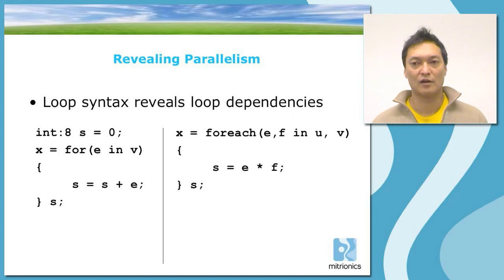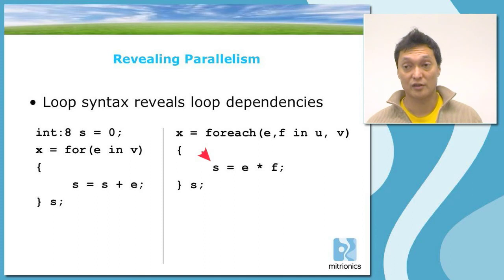In the example on the right, we have a foreach loop. Here, the foreach loop iterates across the two collections u and v. For each element e and f in the collections u and v, we will do the computation of multiplying the elements together. So we are doing a pairwise computation, a pairwise multiplication of the elements of the two collections. This operation has no loop dependencies. The computation of the multiplication of elements 10 in the two collections has no dependency on the computation of elements 9 in the two collections. So the loop has no dependencies on the previous iterations, and therefore all the computations can be performed in parallel.